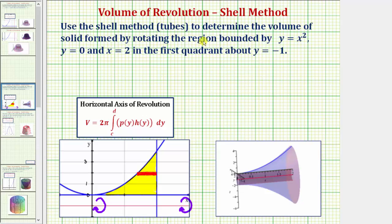We want to use the shell method, or tubes, to determine the volume of the solid formed by rotating the region bounded by y equals x squared, y equals zero, and x equals two in the first quadrant, about y equals negative one.